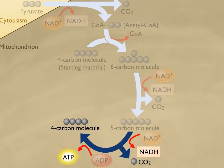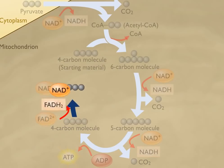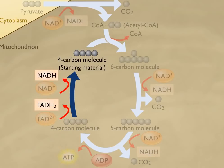As a result of these reactions, a four-carbon molecule is formed in the Krebs cycle. Finally, the four-carbon molecule is further oxidized and the hydrogens that are removed are used to form NADH and FADH2. These reactions regenerate the four-carbon molecule that initially reacts with acetyl-CoA.